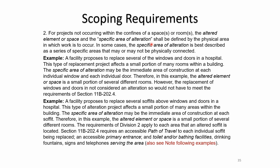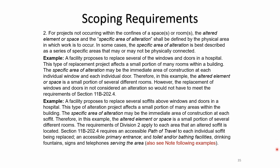Slightly different spin: if you're doing soffit work above all those windows and doors, this alteration project affects a small portion of many areas. The specific area of alteration may be considered the immediate area of construction at each soffit. The requirements of Division II apply to each area with an altered soffit. Section 11B202.4 — the path of travel requirement — applies to each individual soffit being replaced. An accessible primary entrance, toilet and bathing facilities, drinking fountains, signage, and telephones must be provided.